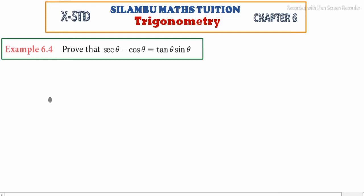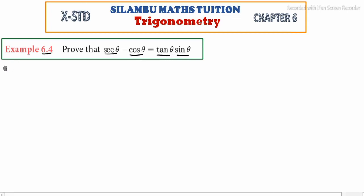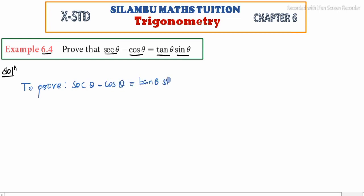Hi students, in this video example 6.4, prove that secant theta minus cos theta is equal to tan theta into sin theta. See solution — to prove: secant theta minus cos theta is equal to tan theta into sin theta. Now, LHS.